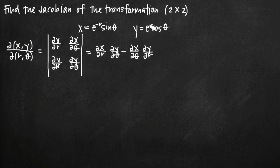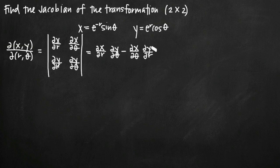When we find the Jacobian of a system like this, we're going to be taking the partial derivatives of x and y with respect to r and theta all at once with a matrix. In a two-by-two situation, we look for the partial derivatives of x with respect to r and theta, and the partial derivatives of y with respect to r and theta. Once we have those four, we plug them into the matrix and evaluate it to find the Jacobian.